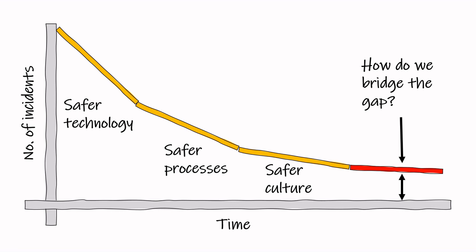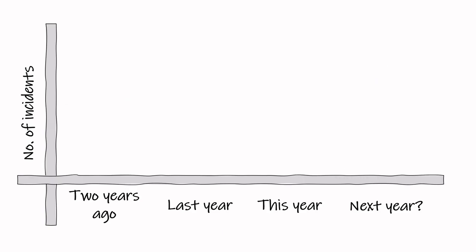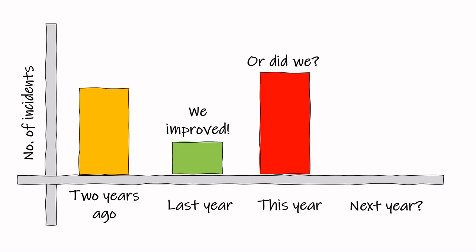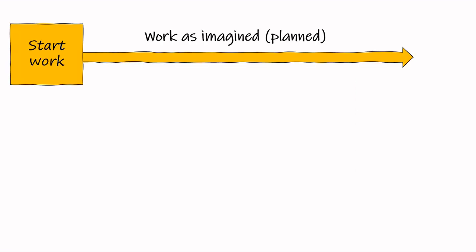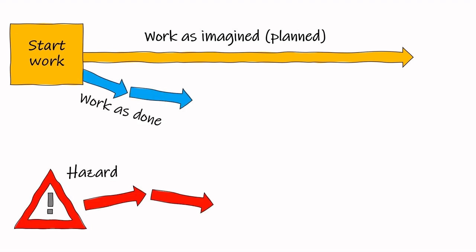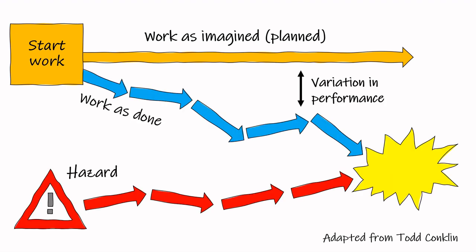One problem is that when we define safety as a lack of incidents, a lack of incidents also means a lack of data. Incidents can appear to be random — ten serious incidents this year, three last year, and who knows how many next year. Even if we have perfect procedures, perfect equipment, and perfect training, the workplace is always changing. The reality that workers face can be very different from what was originally planned, leading to a difference between work as imagined and work as done — in other words, variation in performance.